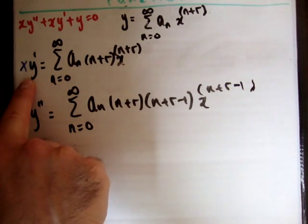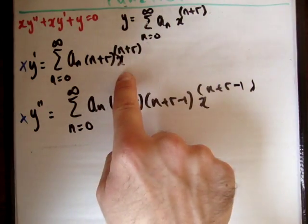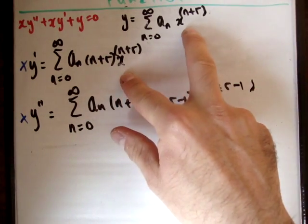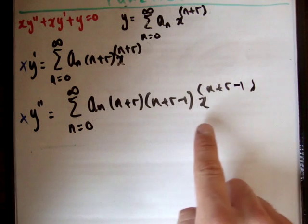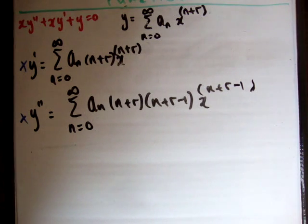If you look at x y prime and y you find that both their powers are equal in that it's x to the n plus r. However, the x y double prime has x to the n plus r minus 1. So that is different.